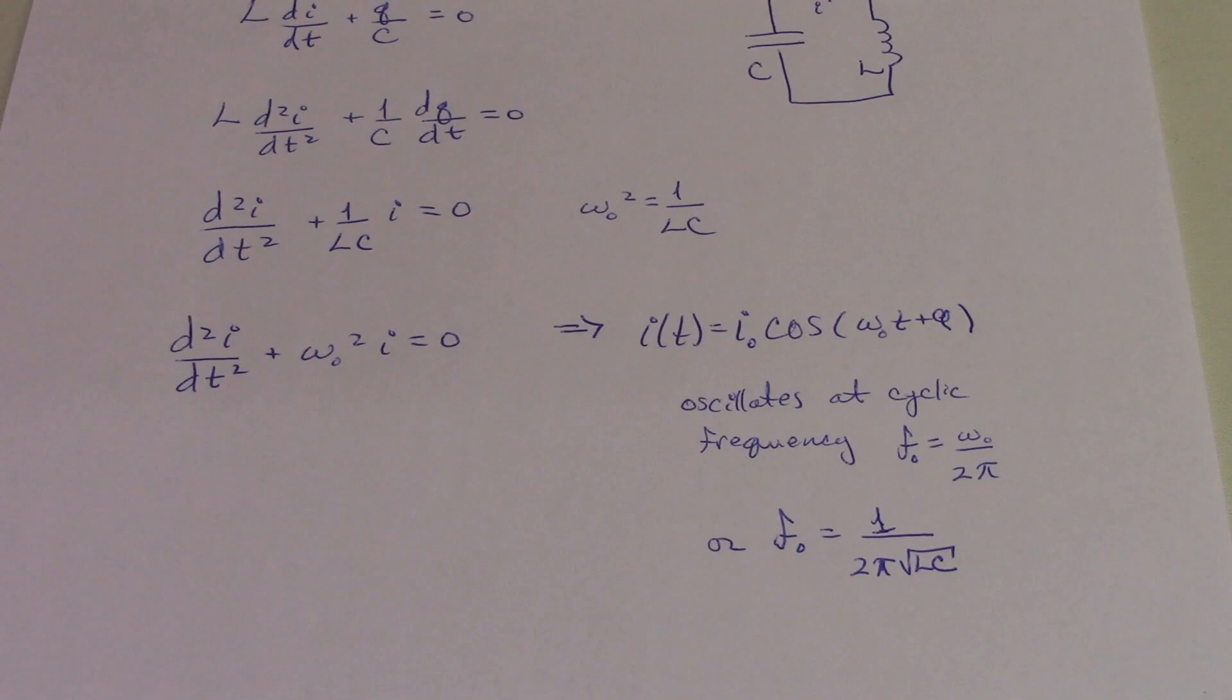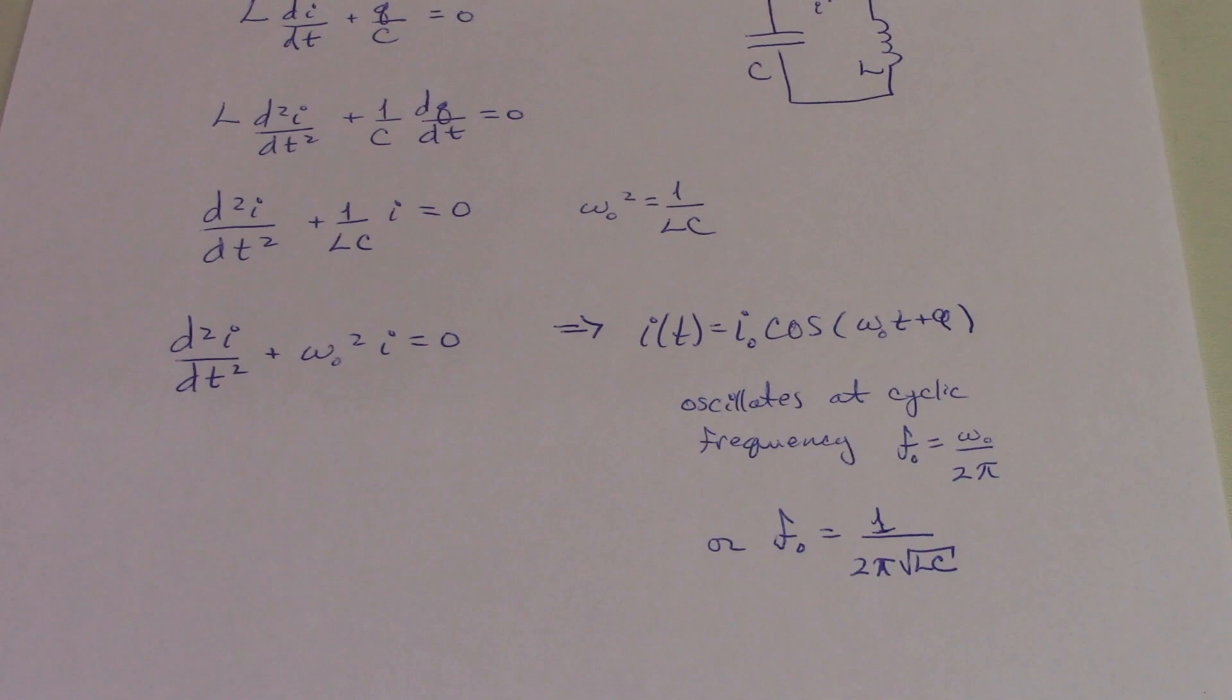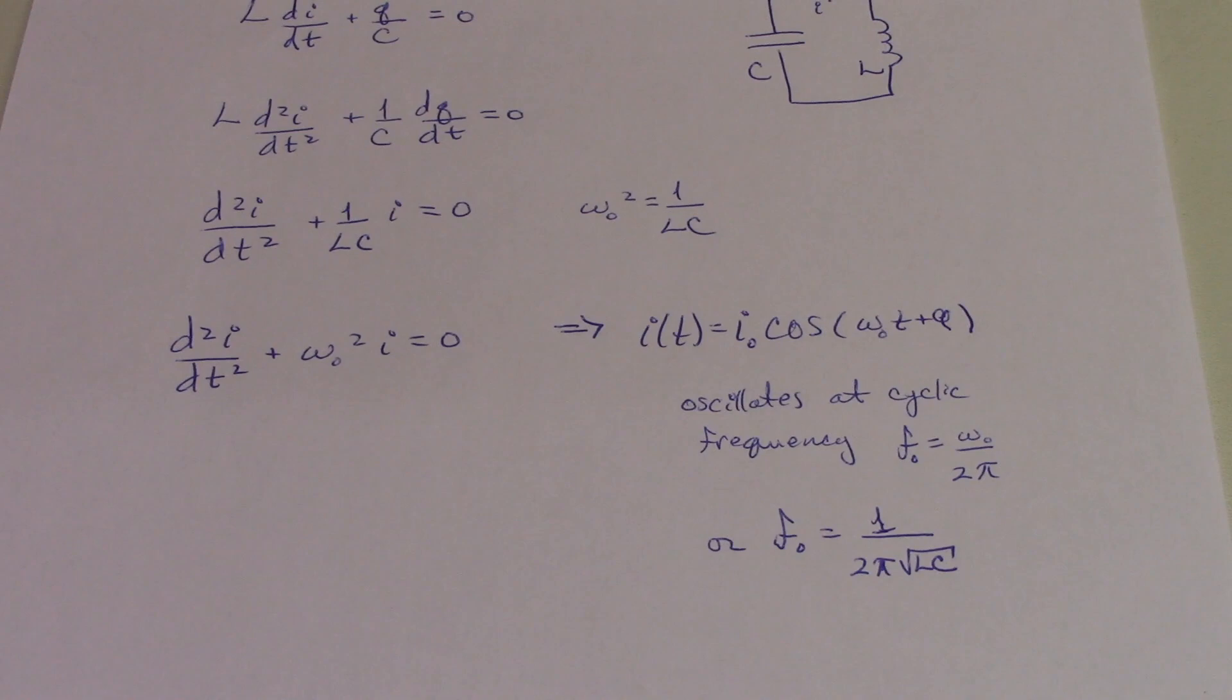When we do that, we get the current as a function of time is equal to some initial value times cosine of omega naught t, and there's an arbitrary phase in there as well. So what does this tell us that we didn't get from simply sketching in the behavior of the current as we did above?